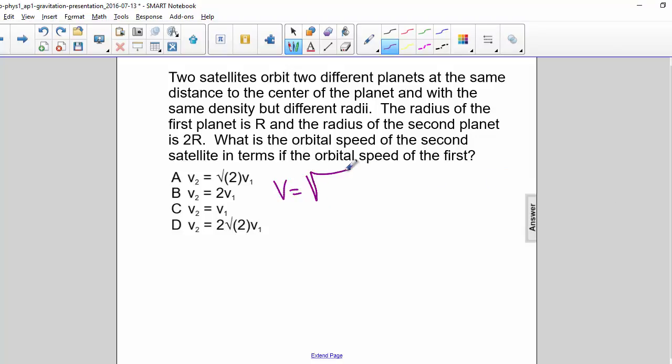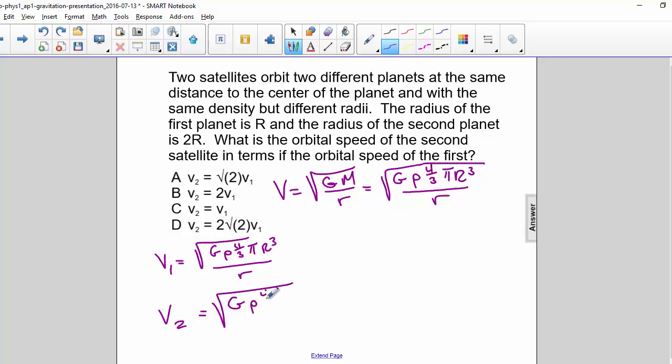The orbital speed is given by square root of g m over r. And we can make m equal to rho 4 thirds pi r cubed. So v1 would be equal to the square root of g rho 4 thirds pi r cubed over r, and v2 would be equal to the square root of g rho 4 thirds pi 2r cubed over r.